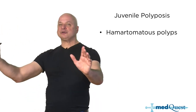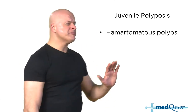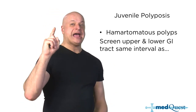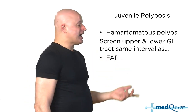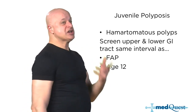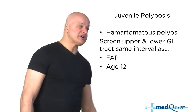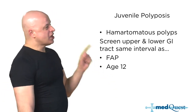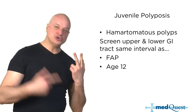APC (adenomatous polyposis coli) causes thousands of adenomatous polyps, while juvenile polyposis causes a much smaller number of hamartomas. But with juvenile polyposis, you must also do upper endoscopy because this genetic syndrome gives a 5–20% chance of gastric tumors, with a lifetime risk of gastric tumor up to 20–30%. That's why upper endoscopy is also required.